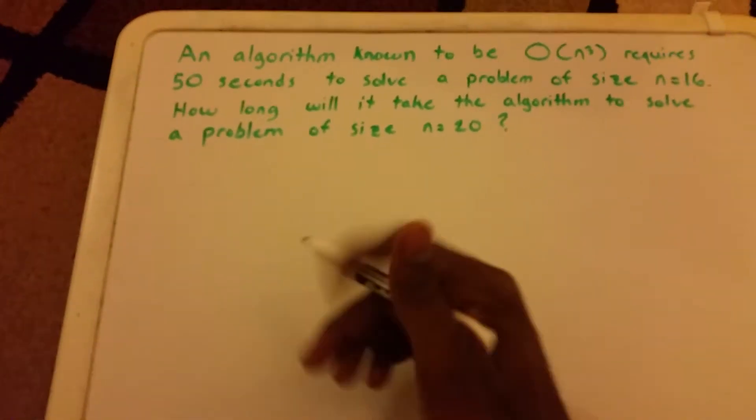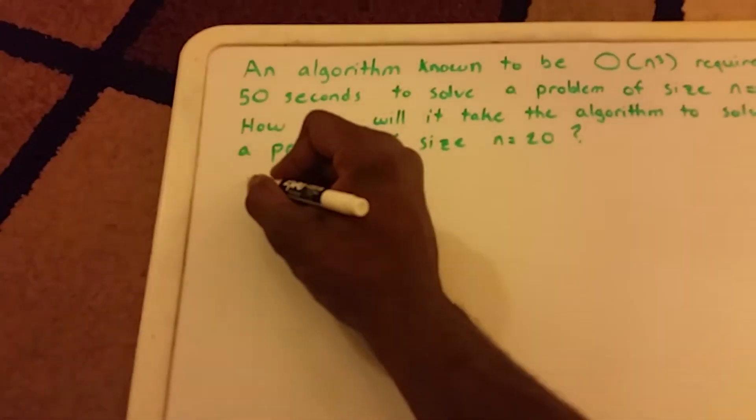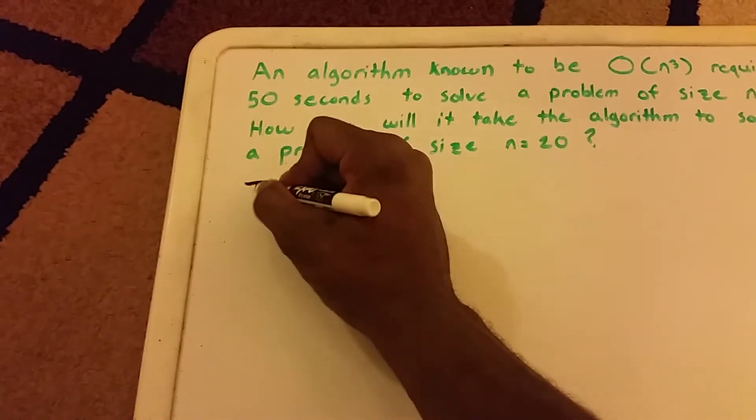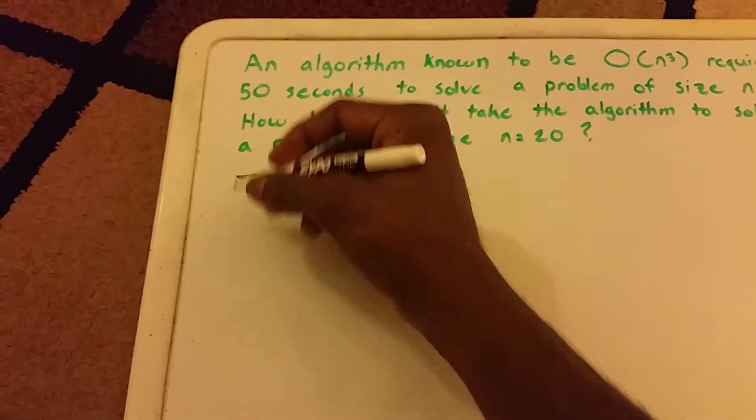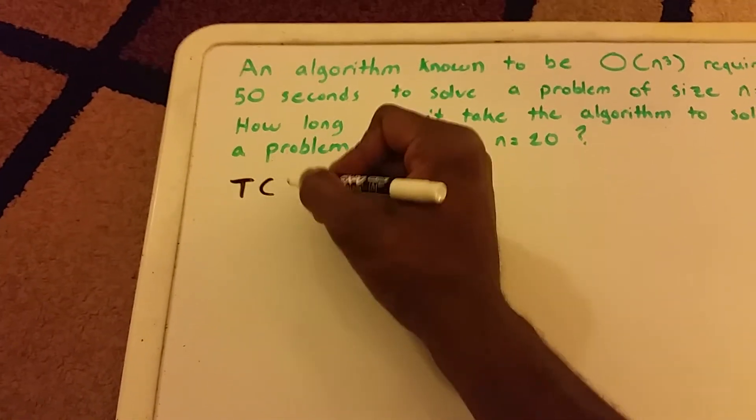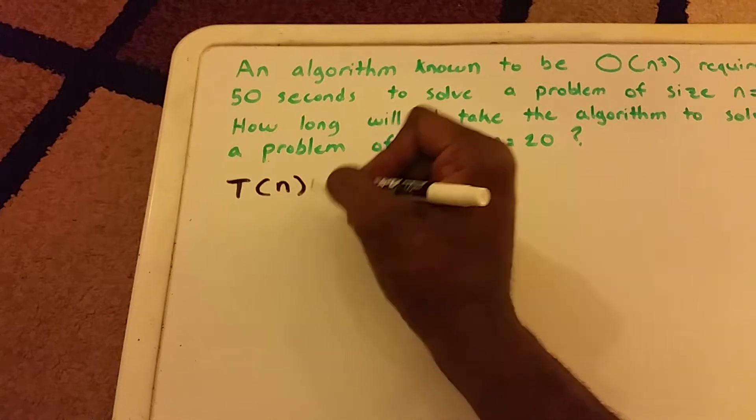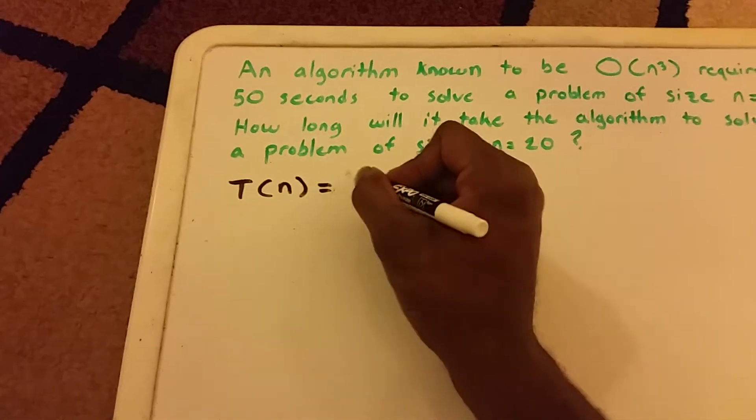So first we have to set up the problem. And we do that by creating a function of time, we call it T, and it takes an input size of n, and that time equals something.